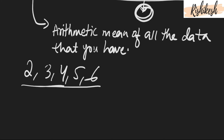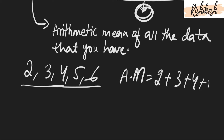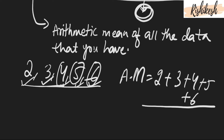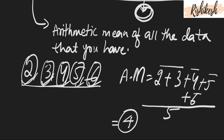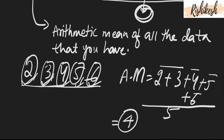How do we calculate arithmetic mean? AM is nothing but: arithmetic mean equals 2 plus 3 plus 4 plus 5 plus 6, divided by total number of data. The total number is 5, so 2+3+4+5+6 = 20, and 20 divided by 5 comes out to be 4. So 4 becomes the arithmetic mean of this data, and 4 is also the average.